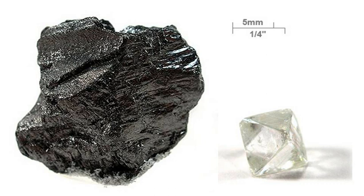Coal is very rich in carbon — anthracite contains 92–98% — and is the largest commercial source of mineral carbon, accounting for 4,000 gigatons or 80% of fossil fuel. As for individual carbon allotropes, graphite is found in large quantities in the United States (mostly in New York and Texas), Russia, Mexico, Greenland, and India. Natural diamonds occur in the rock kimberlite, found in ancient volcanic necks or pipes. Most diamond deposits are in Africa, notably in South Africa, Namibia, Botswana, the Republic of the Congo, and Sierra Leone. Diamond deposits have also been found in Arkansas, Canada, the Russian Arctic, Brazil, and in Northern and Western Australia.